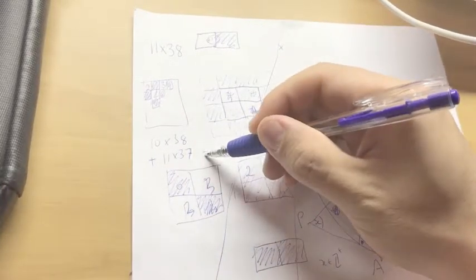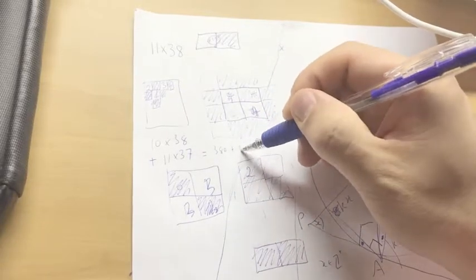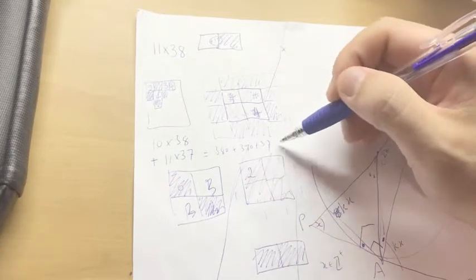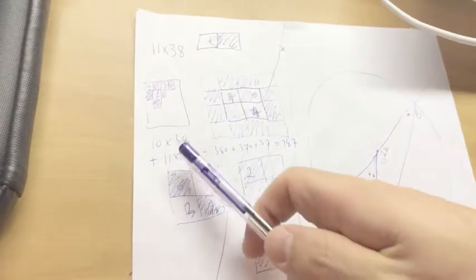I actually just got the number that this was equal to. So this is equal to 380 plus 370 plus 37, so this is equal to 787. So I just had 787, I didn't realize it was actually equal to this.